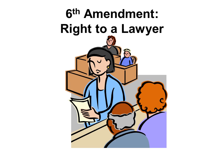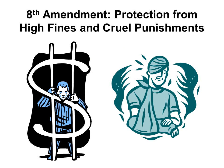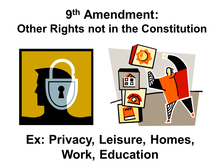The sixth amendment guarantees that we have a right to a lawyer if we are accused of a crime. The seventh amendment guarantees our right to trial by a jury of our peers. The eighth amendment protects us from high fines and cruel punishments. The ninth amendment talks about rights not in the Constitution. For example, the right to privacy, the right to leisure, the right to housing.